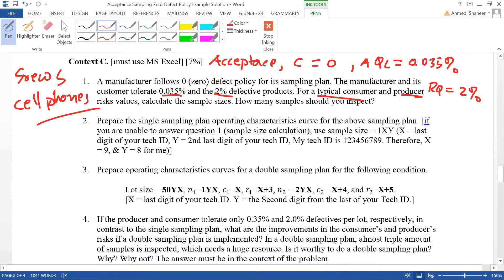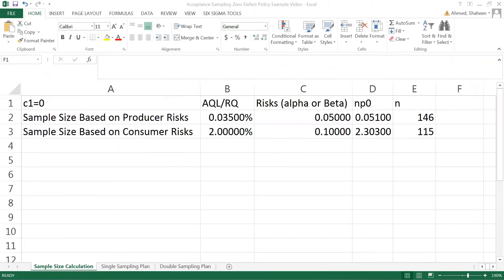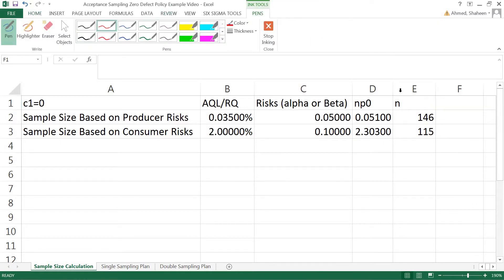The typical consumer and producer risk values: consumer risk, which is beta, is 0.1 or 10 percent, and the producer risk, which is alpha, is 0.05 percent. I have calculated the sample size based on the producer risk as 146 and based on consumer as 115. If you want to satisfy both, you need to inspect 146 pieces.